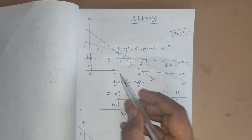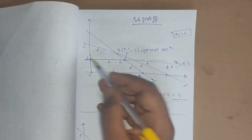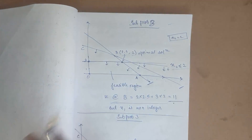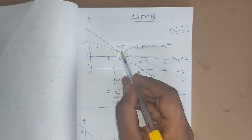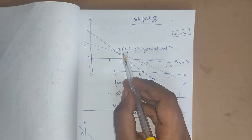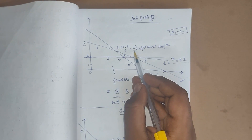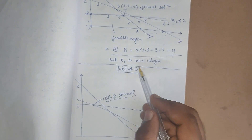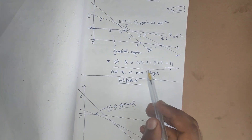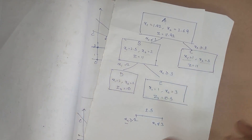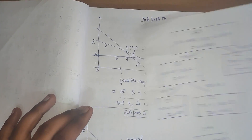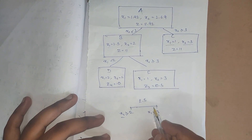We evaluate the extreme points of subproblem B into the objective function and find that point B with coordinates (2.5, 2) gives the optimal solution with Z = 11. Here x2 = 2 is an integer, so we are satisfied with x2. However, x1 = 2.5 is not an integer, so we must branch again on x1.